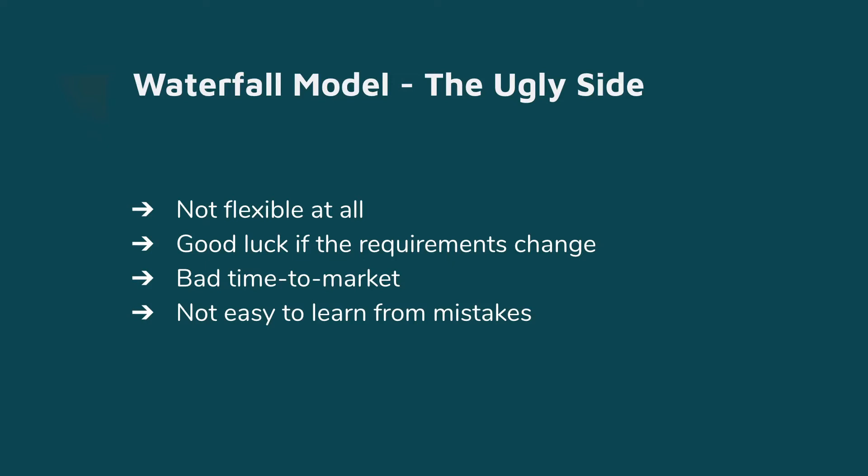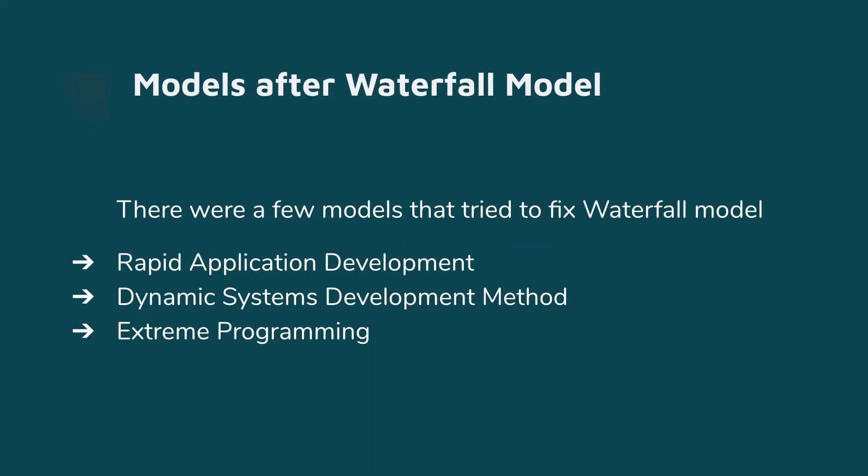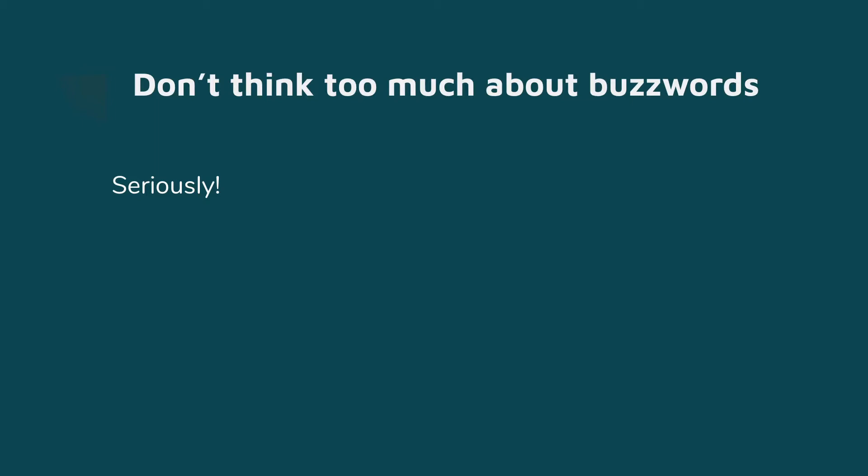Obviously it's not flexible. If the client says they need a different set of requirements or a new feature, it's going to be really difficult to change that. After waterfall, there came a lot of different types of software development models — rapid application development, dynamic systems, extreme programming — but you don't have to worry about any of this. The point is to understand why we have the DevOps methodology in place. So the next software development model is called the Agile model.